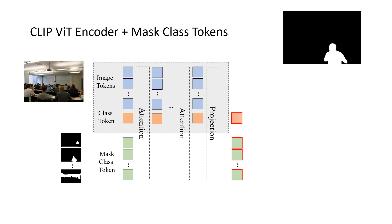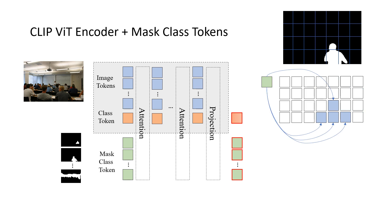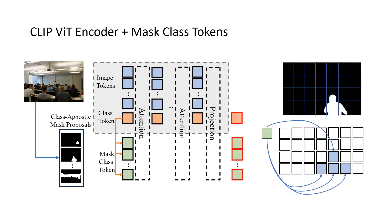We utilize the mask to serve as the attention mask in the transformer layer. For a given mask, we first patchify the mask as we do for the input image, so only several patches contribute to the foreground object. Instead of attending all image tokens, we mask out all other unrelated image tokens. Therefore, for this specific mask class token, it will only attend the relevant image tokens in each self-attention layer, and output the corresponding partial image feature. We assign the same weights of the class token in the pre-trained CLIP model to all the newly added mask class tokens.